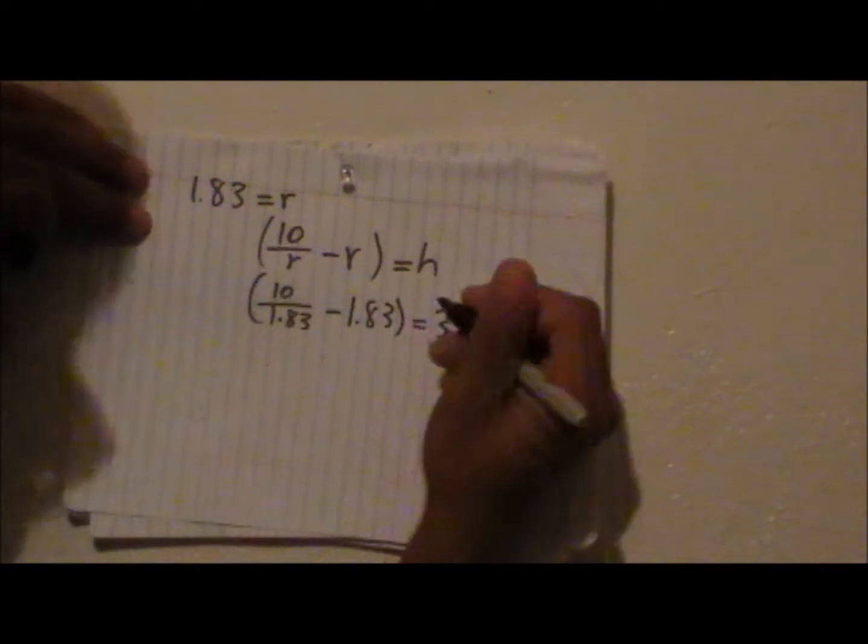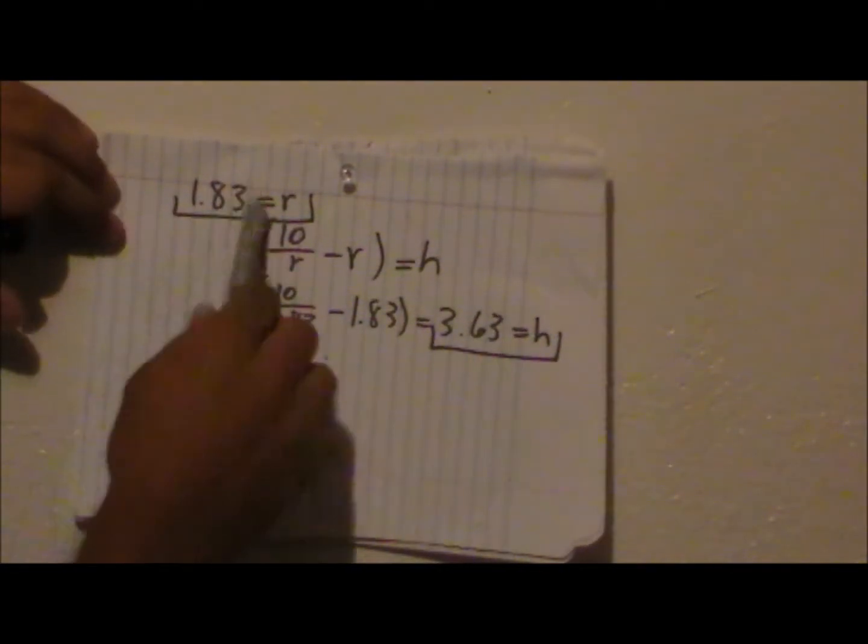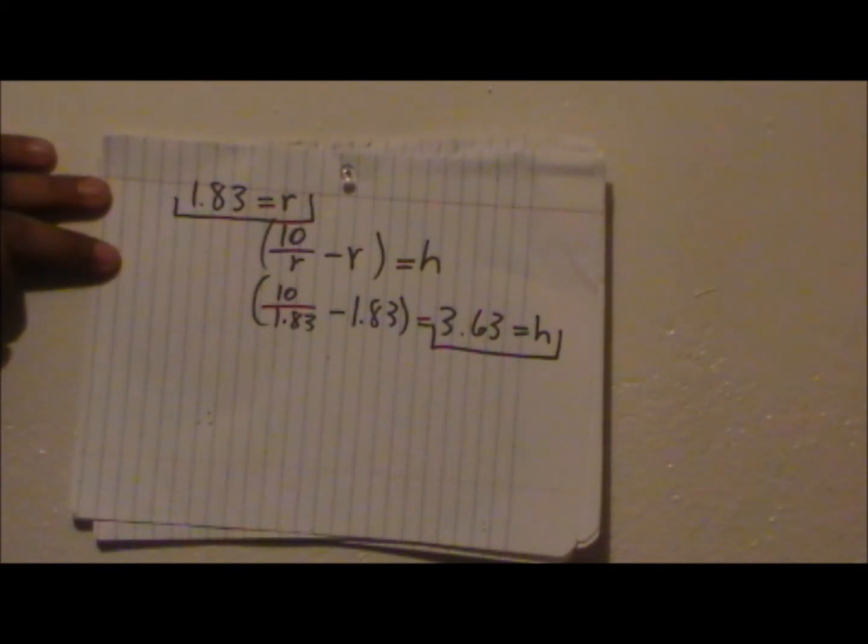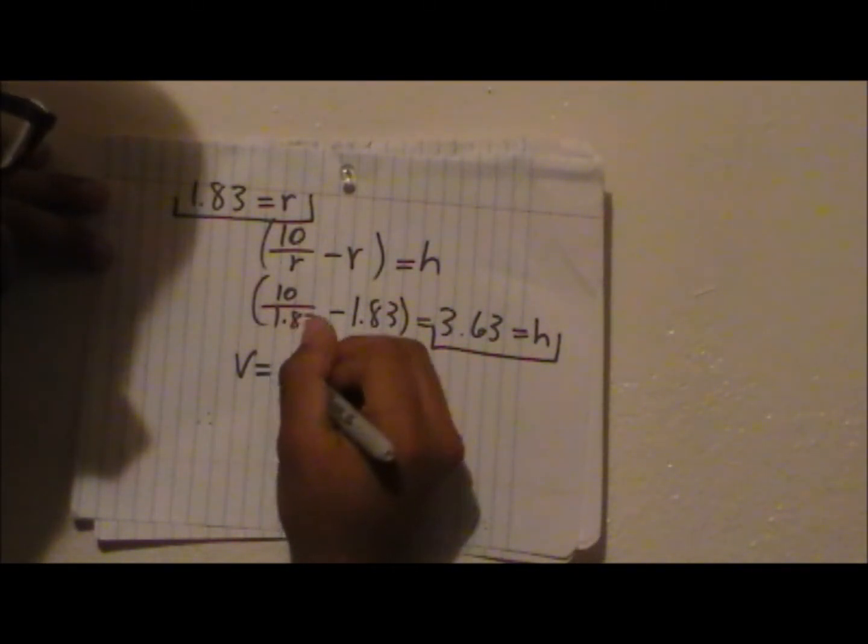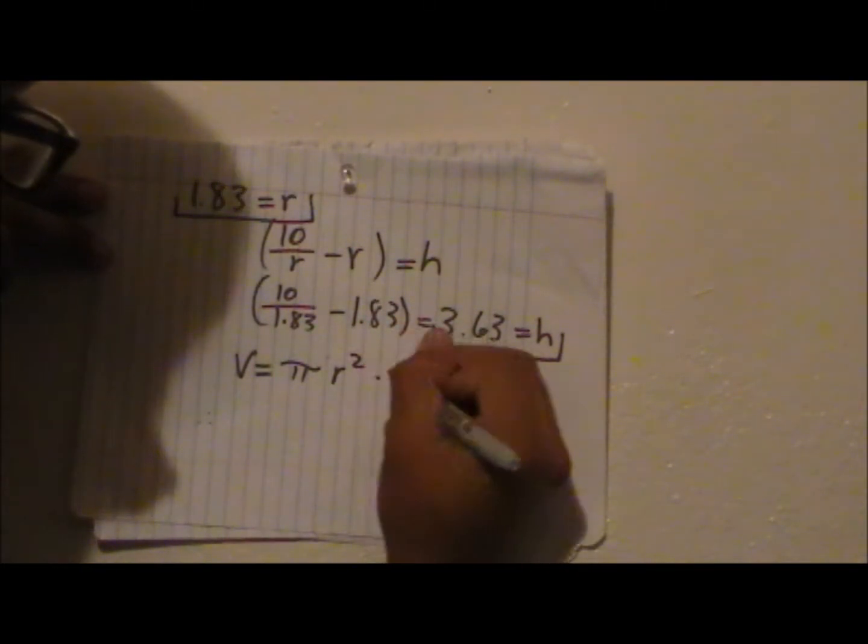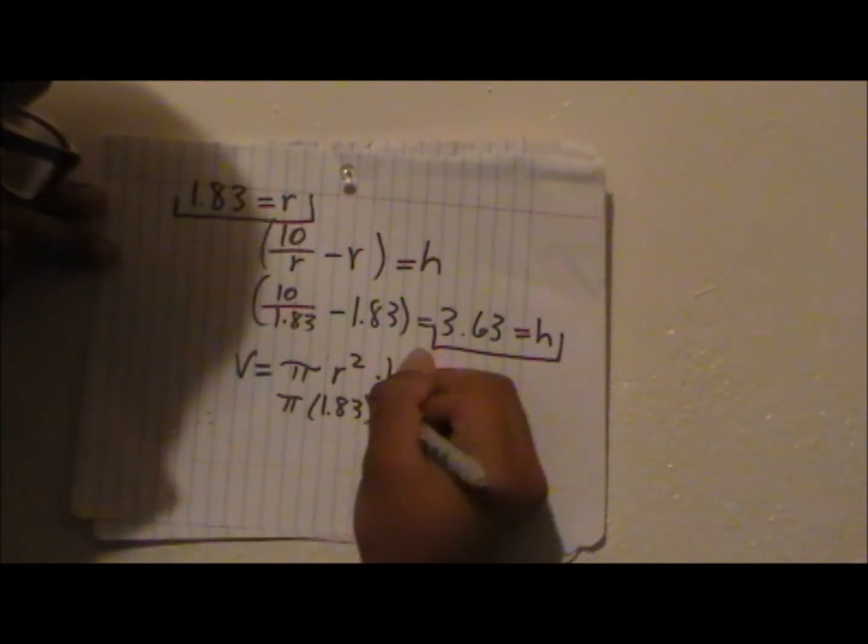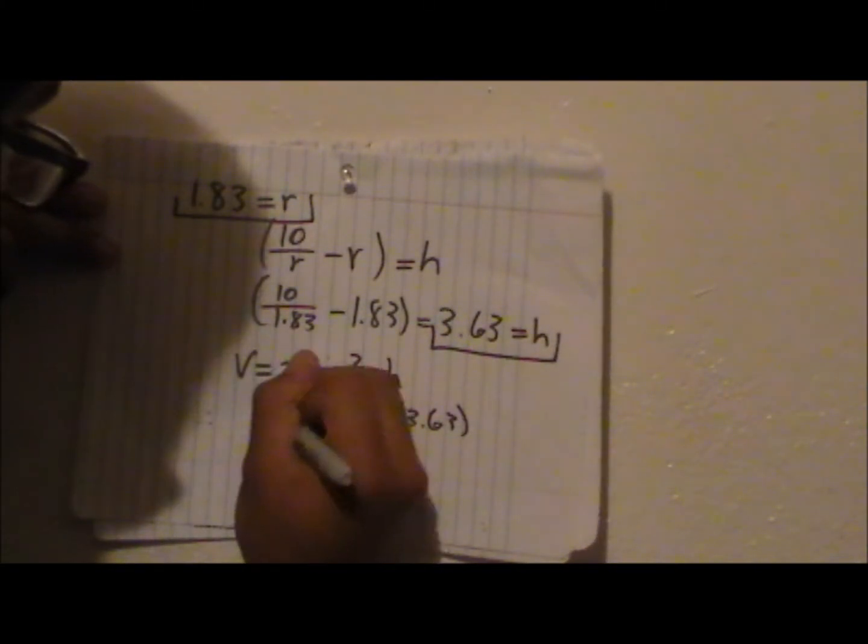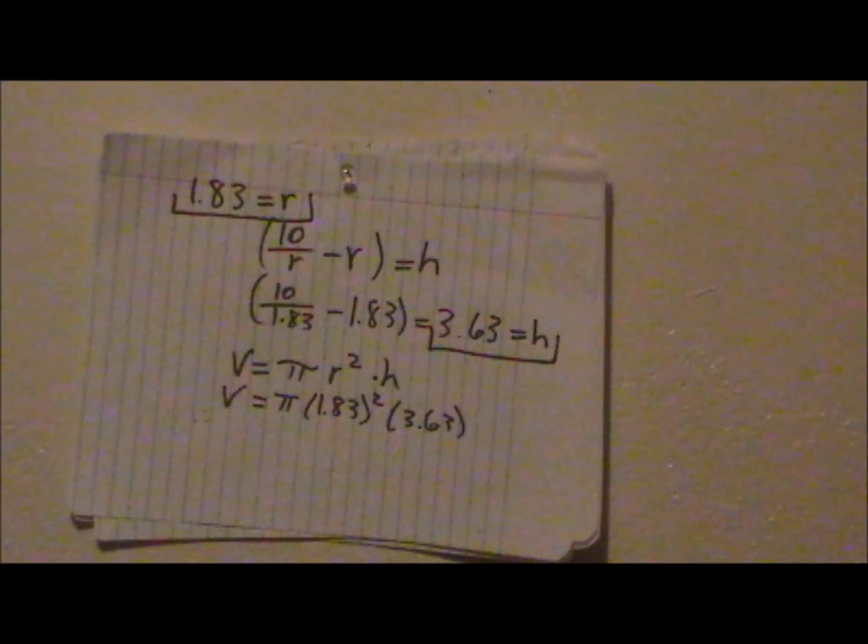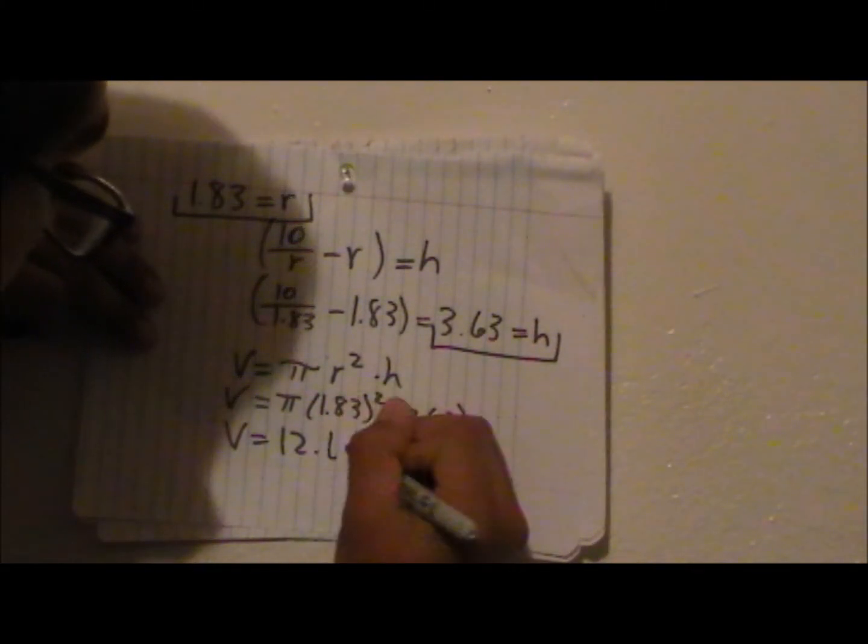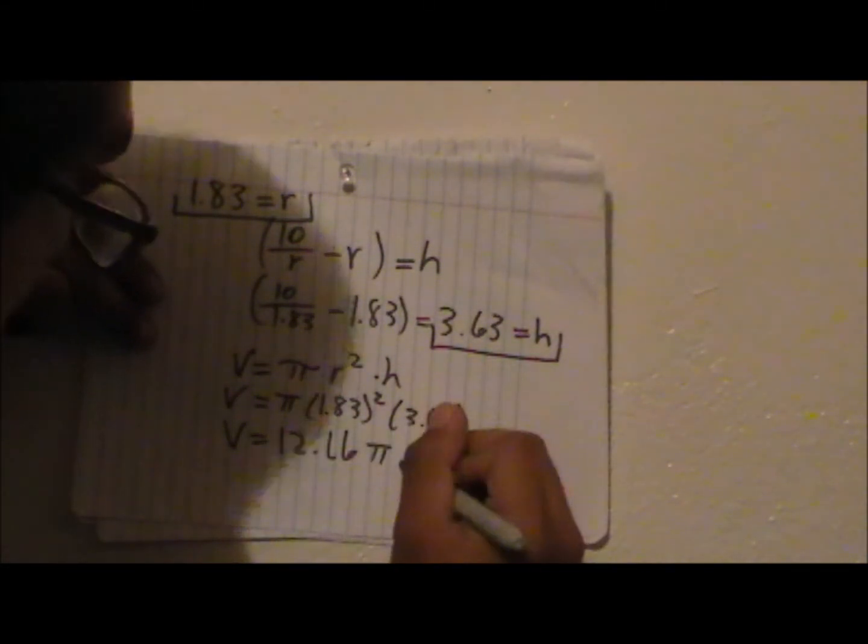So we're basically done. We found h, which is our height, and we found radius, which was what we're looking for, which would give us our maximum volume for a cylinder. But if you want to go ahead and plug that into the volume formula, you can go ahead and do so. The volume, the maximum volume for this cylindrical can, the volume is 12.16 pi meters cubed.